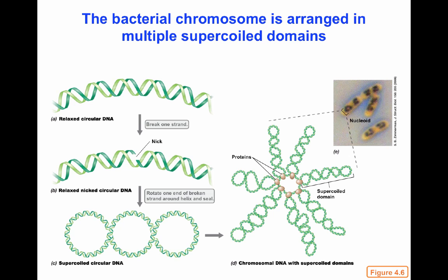The bacterial chromosome is arranged in multiple supercoiled domains, not just a simple single domain. In a dividing bacterium with two nucleoids, each nucleus contains a chromosome with small supercoiled domains held together by proteins. Those supercoiled domains are generated by the supercoiling mechanism produced by topoisomerase, which generates a nick and then winds the DNA around itself to create a helix, allowing the molecule to completely supercoil.